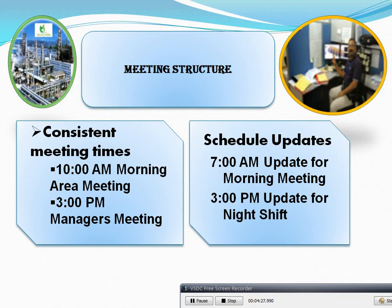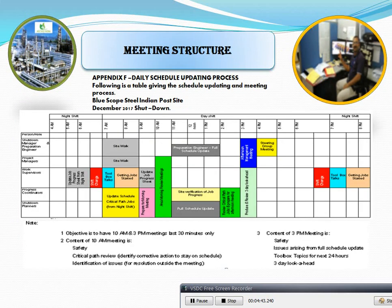4th phase of shutdown management: execution. Meeting structure: consistent meetings at set times. 10 a.m. morning area meeting. 3 p.m. manager meeting with schedule update. 7 a.m. morning meeting update. 3 p.m. update. 4th of the night meeting.